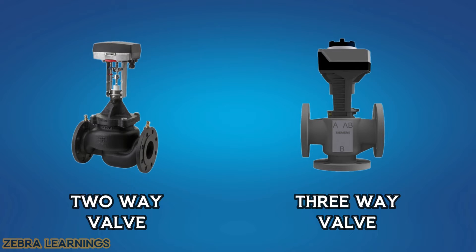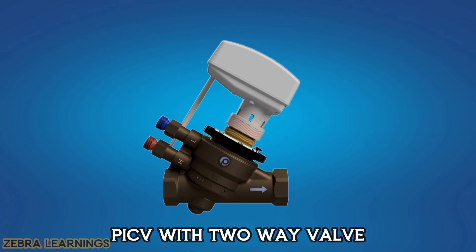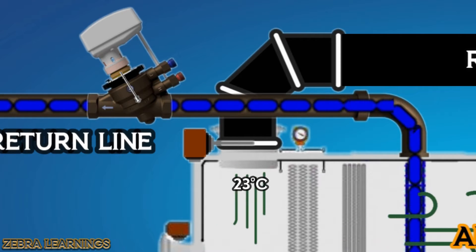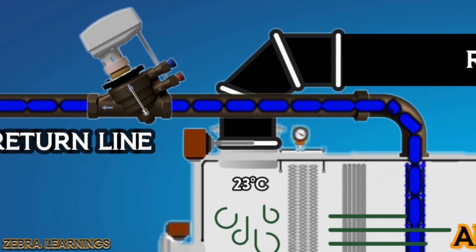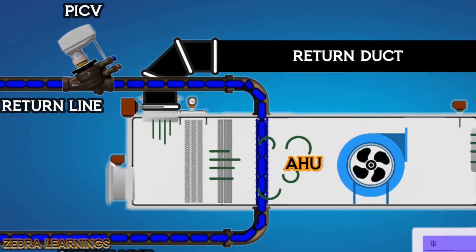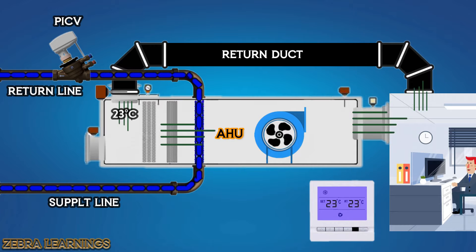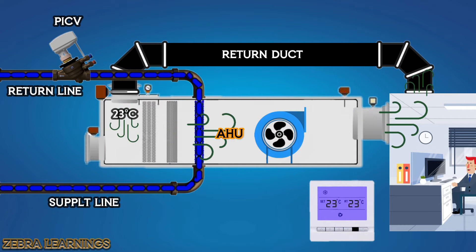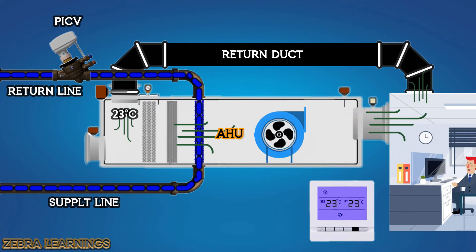In this video, we are going to learn about the 2-way valve and 3-way valve. In the last video we saw about PICV, and this video is the continuation of that. We saw that when the room temperature reaches the set point, the PICV closes and the water flow stops in the cooling coil. After the PICV is closed, the pressure in the pipeline increases as the pump continues to run. We are going to see how the increased pressure is controlled by 2-way valve and 3-way valve.